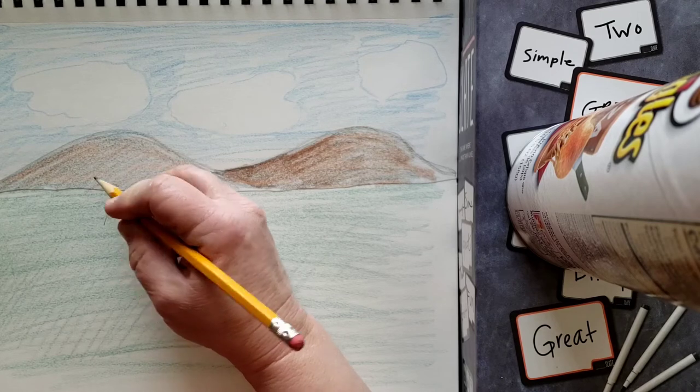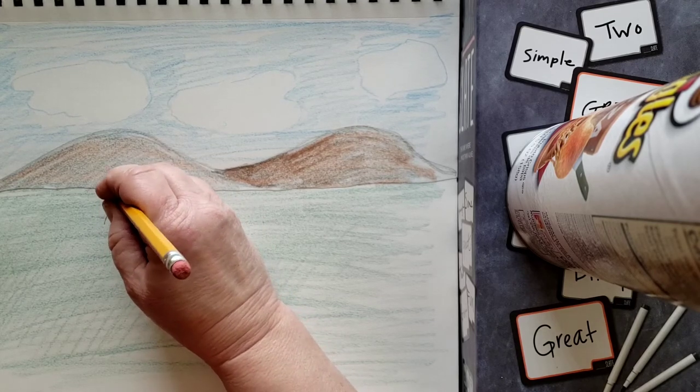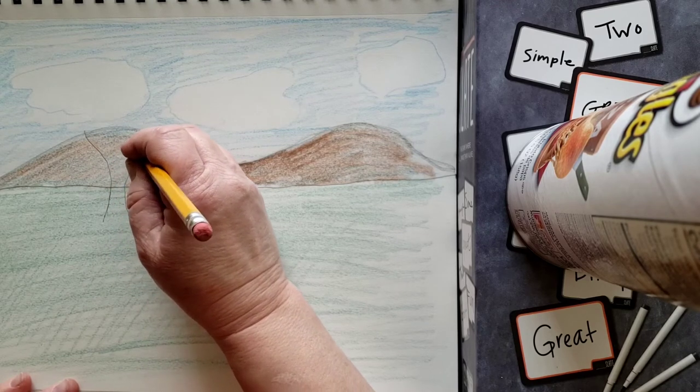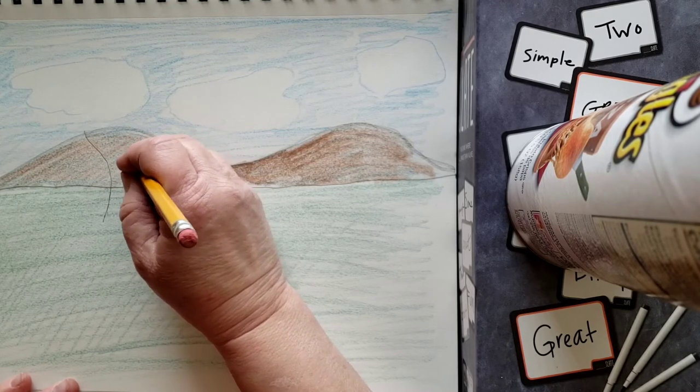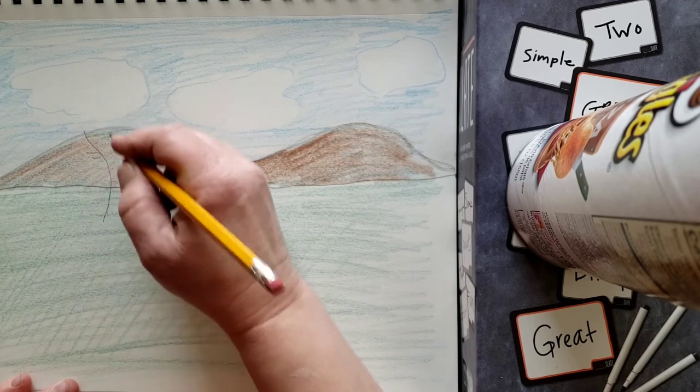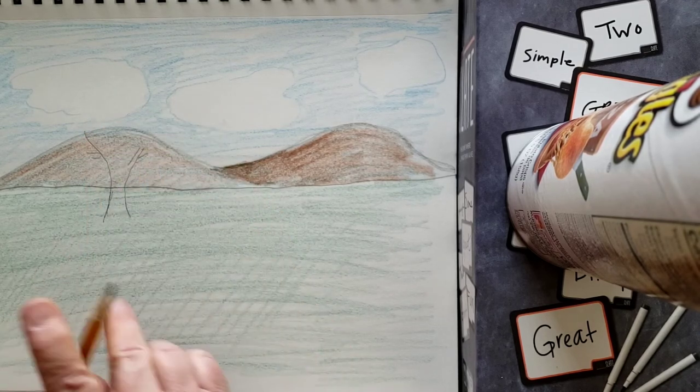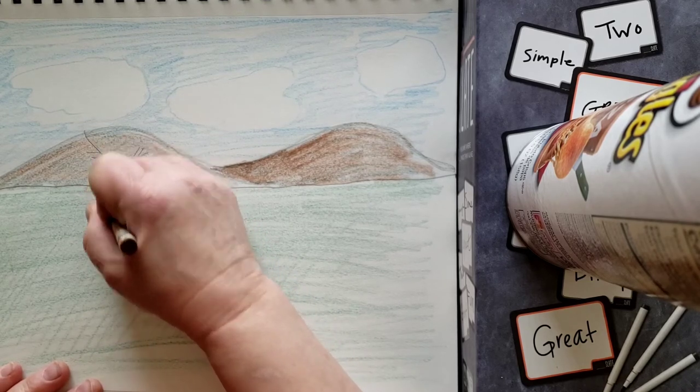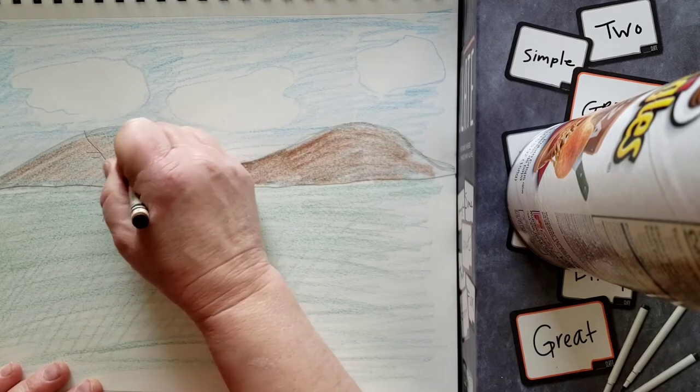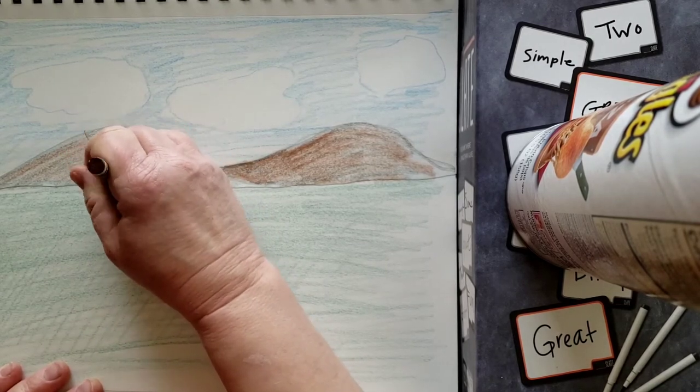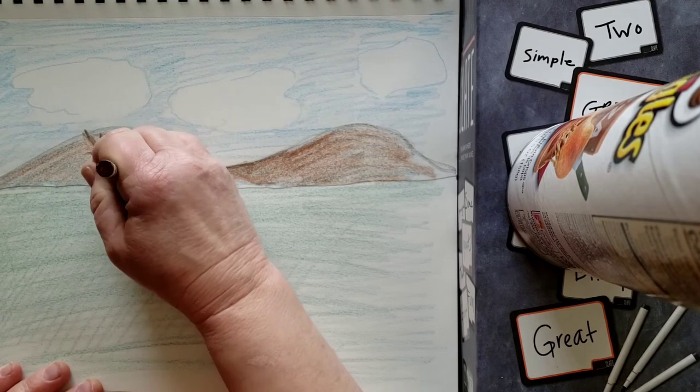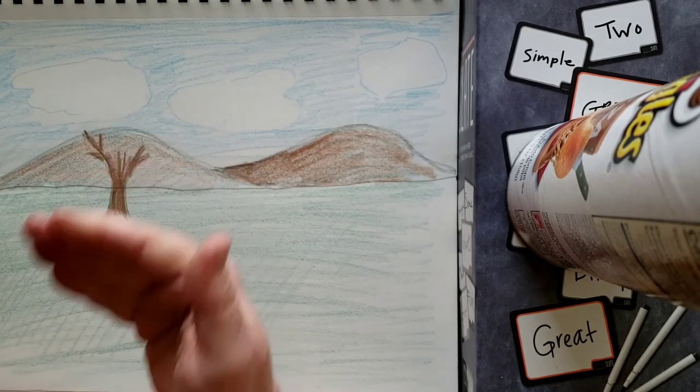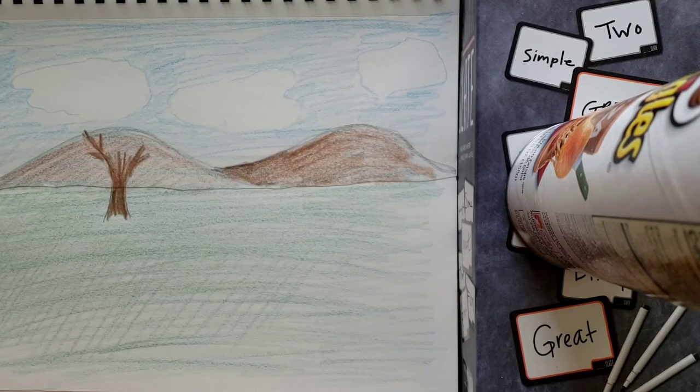I'm going to draw its trunk going up like this and some branches. And this is going to be my tree. And I can take that darker brown and color a tree with some branches. And it's fairly small, but it's not all the way back by the hill.